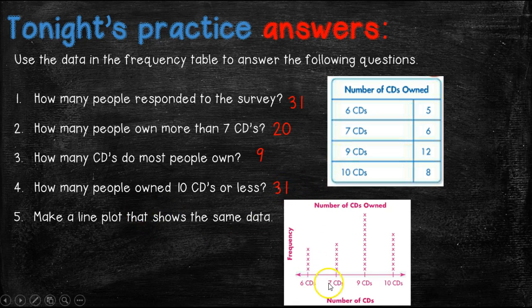And then here's an example for a line plot. So we have our number line. We have all of our data points: 6, 7, 9, and 10. And then we have an X going up for each one. So for 6, we had 5 X's. For 7 CDs, we had 6 X's. For 9 CDs, we had 12 X's. And for 10 CDs, we had 8 X's.